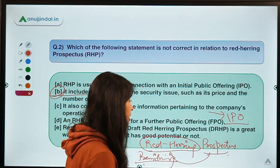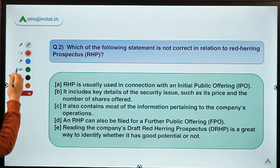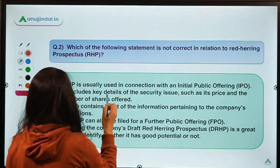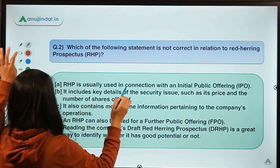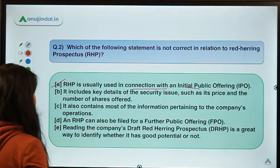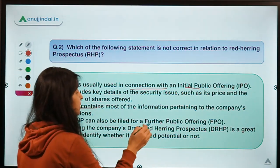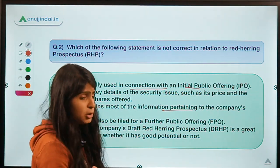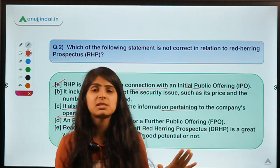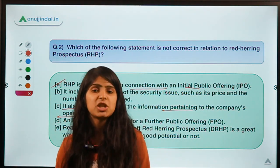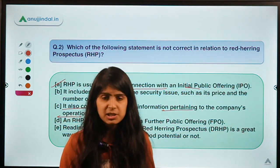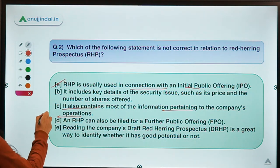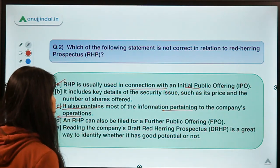Looking at the details: the RHP is used in connection with an IPO — that statement is correct. It also contains most of the information pertaining to the company's operations: the product or service, turnover, mission, vision, and key management personnel. It is also correct that an RHP can be filed for a Further Public Offering — even if a company is not issuing shares for the first time, a subsequent offering can also use an RHP.